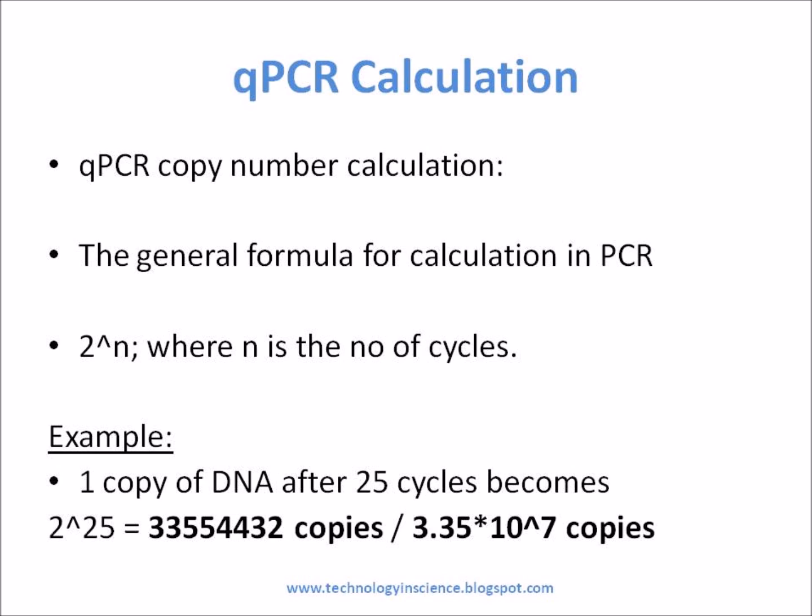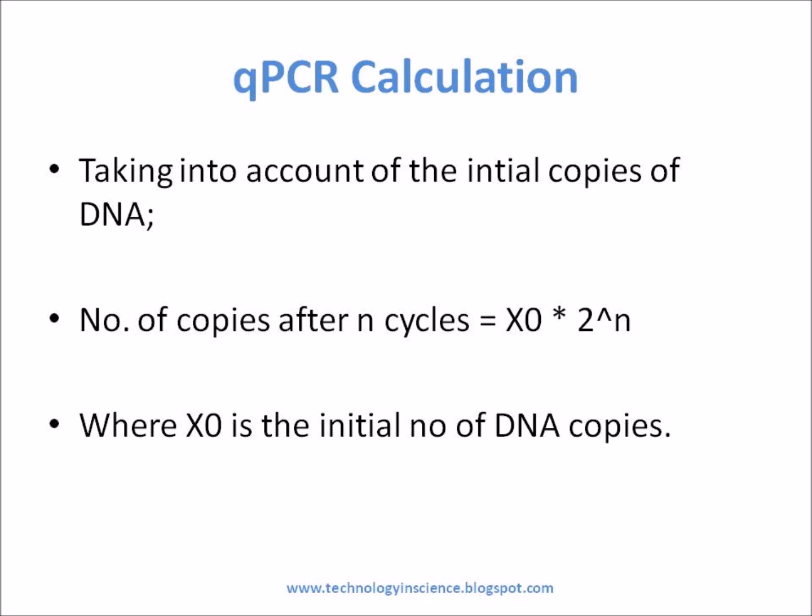If perfect doubling occurs with each amplification cycle, the spacing of the fluorescence curves will be determined by the equation 2^n equals dilution factor, where n is the number of cycles between curves at the fluorescence threshold. For example, with a tenfold serial dilution of DNA, 2 to the power n equals 10. Therefore, n equals 3.32, and the CT values should be separated by 3.32 cycles.